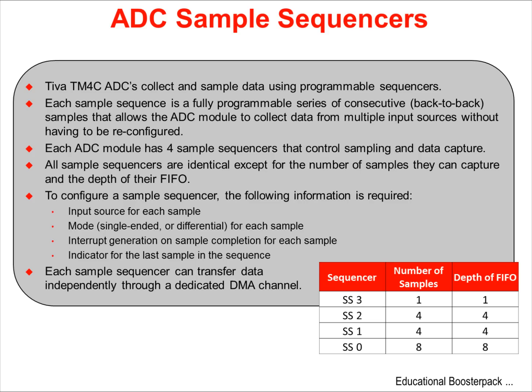The analog-to-digital converters collect and sample their data using programmable sequencers. Each sample sequence is a fully programmable series of consecutive samples that allows the ADC to collect data from multiple input sources without having to be reconfigured. Each module has four sample sequencers that control the sampling and data capture, and they are identical except for the number of samples they can capture and the depth of the associated FIFO.